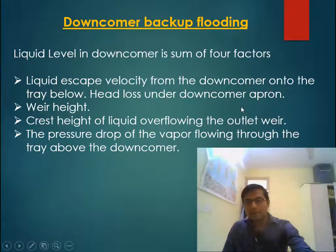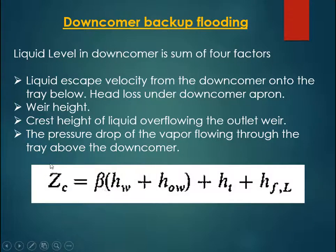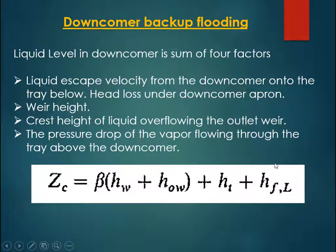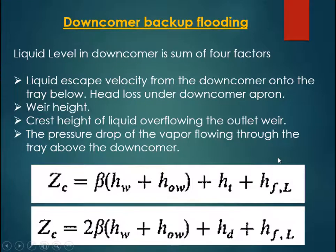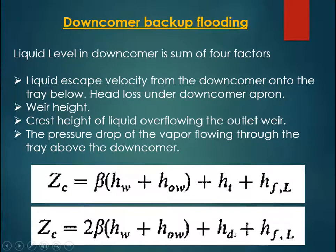Numerically, the downcomer liquid level z (clear liquid level inside the downcomer) equals the liquid level on the tray where liquid flows from the downcomer, plus the tray pressure drop, plus the exit head loss. Tray pressure drop equals the dry tray pressure drop plus the hydraulic tray pressure drop, and the hydraulic pressure drop equals the clear liquid head on the tray, which is beta times (hw plus how).